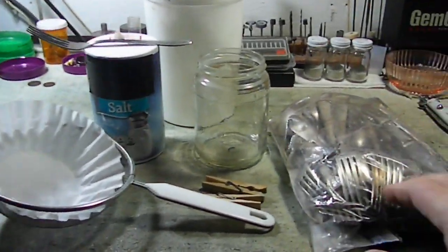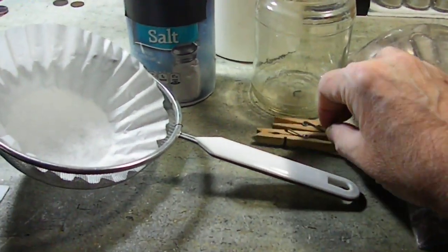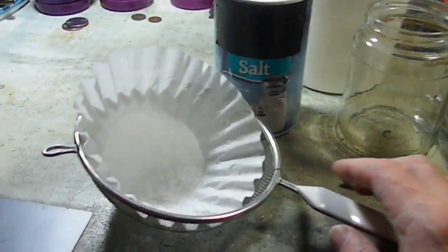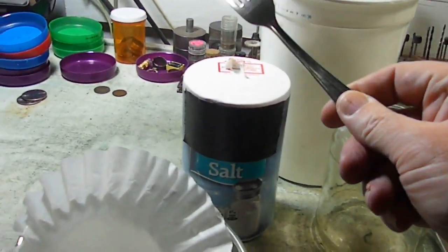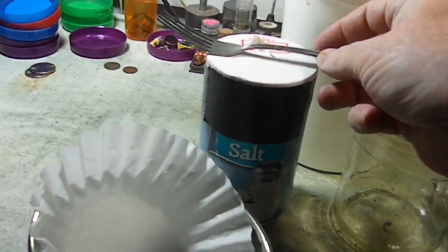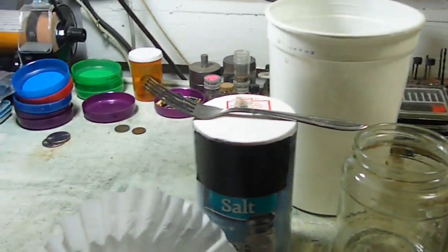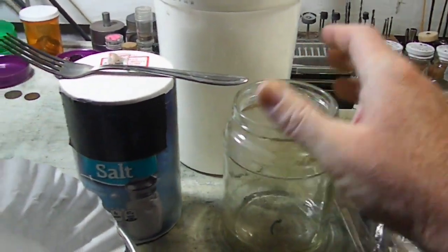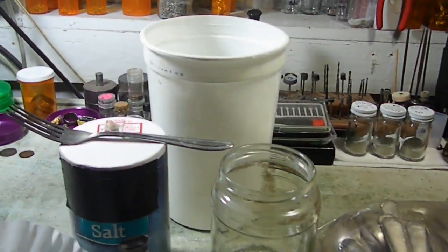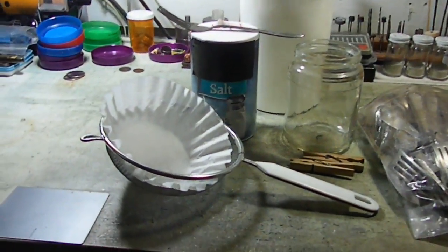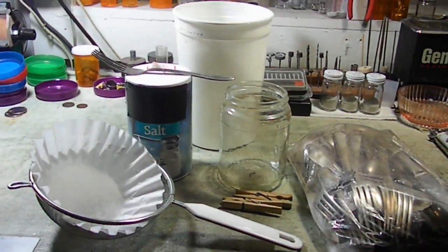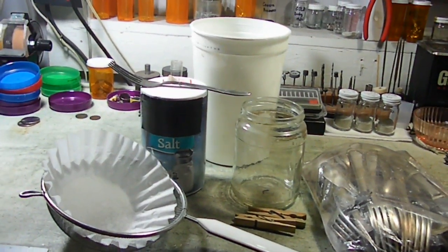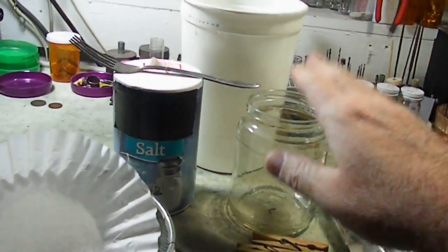This is basically what you need. First you need some material, a couple clothespins, a strainer, some salt, a stainless steel knife, fork, or spoon, preferably non-magnetic if you can get it. You need a jar to work in, something to dispose of your water in.